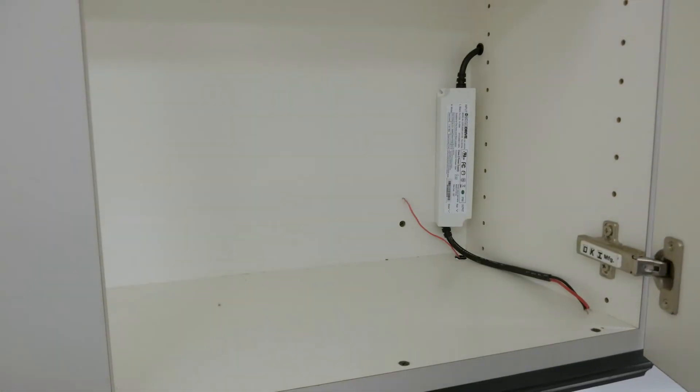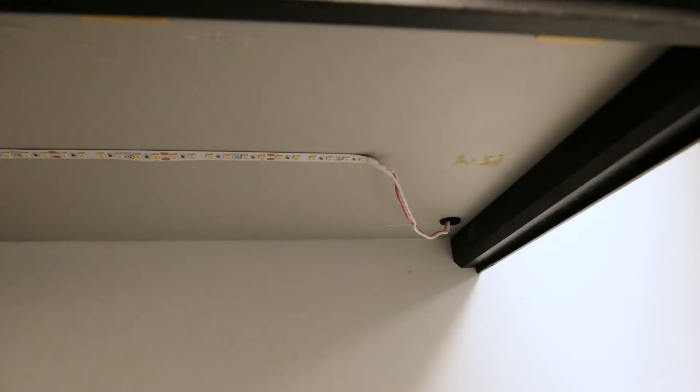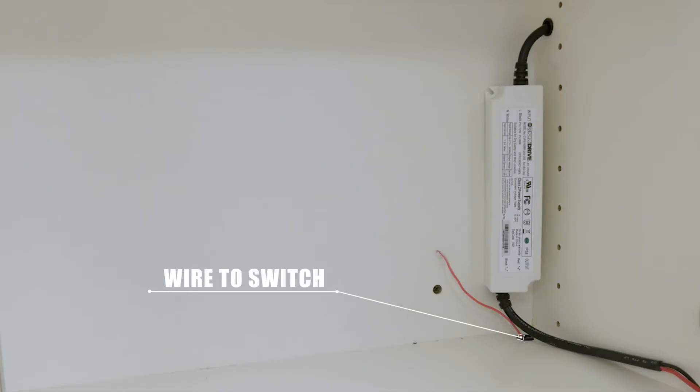As you saw with the previous install, we have a power supply tucked away in the cabinet with the wire to power outlet going outside of the cabinet. We have the strip mounted on the cabinet below with the wires fed up into the cabinet.